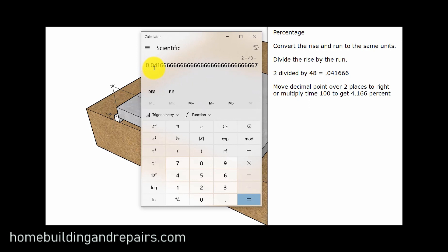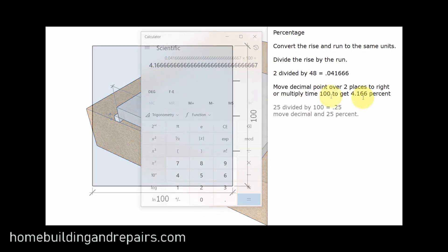And then we can simply just move the decimal point over two places. Each place that you move it over would be a tenth, hundredth, thousandth, ten-thousandth, something like that. But if that's too complicated for you, this isn't that difficult. Take this number, multiply it times 100, and you're going to get 4.166, which would be the percentage of that.